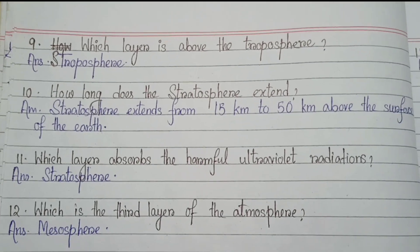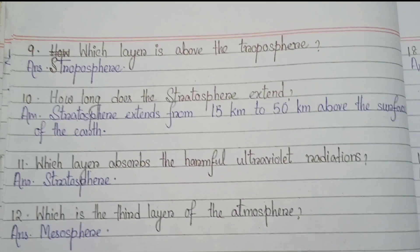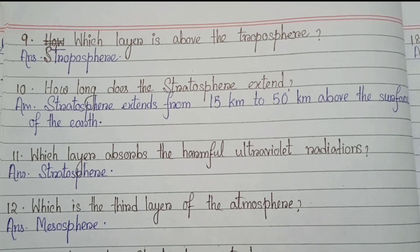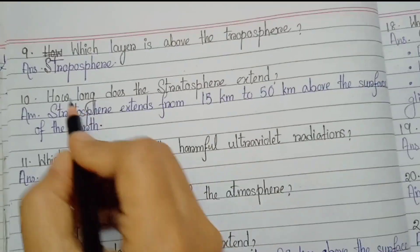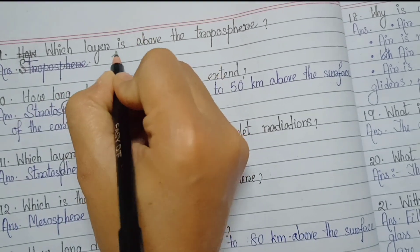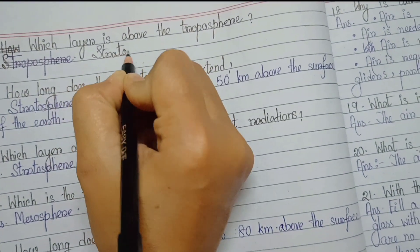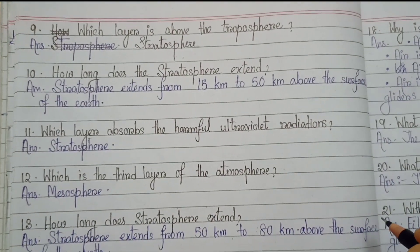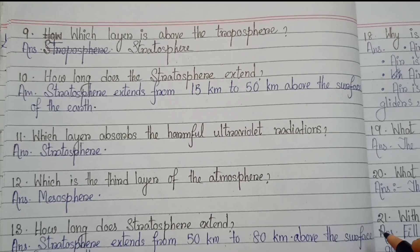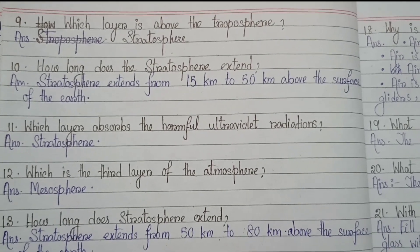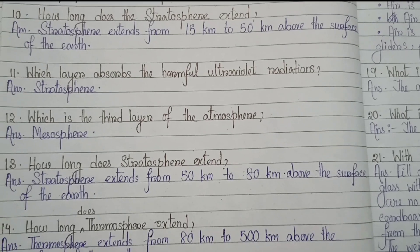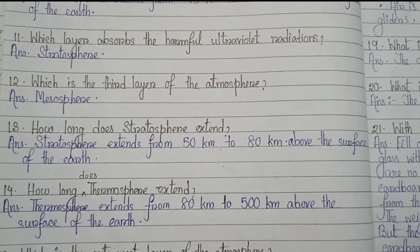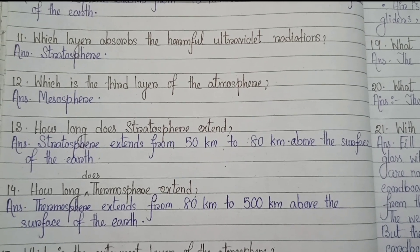Number 9: Which layer is above the troposphere? Stratosphere. Number 10: How long does the stratosphere extend? The stratosphere extends from 15 kilometers to 50 kilometers above the surface of the earth. Number 11: Which layer absorbs the harmful ultraviolet radiations? Stratosphere.